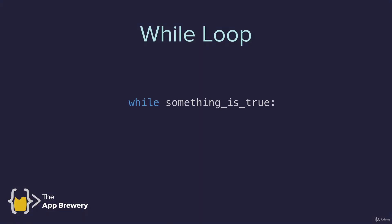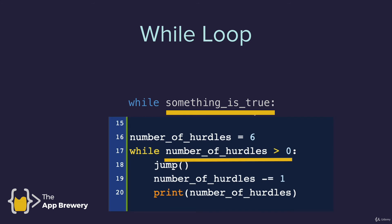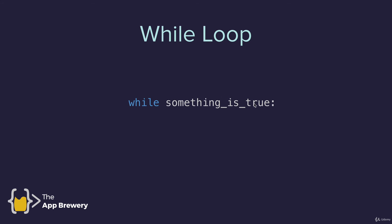This is what the syntax for the while loop looks like. First, we have the while keyword, then a condition to test — previously it was number_of_hurdles being greater than zero. Whenever that condition is true, it looks inside the while loop at the indented lines of code to carry out those instructions. When it gets to the end, it comes back to the beginning and tests the condition again. If still true, it loops and loops until the condition becomes false, at which point it exits.